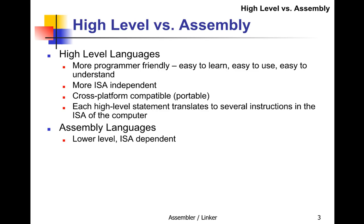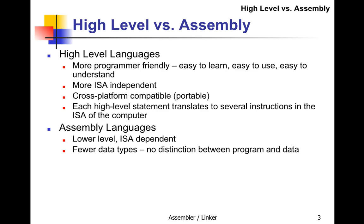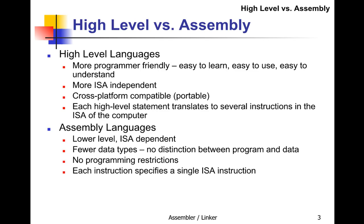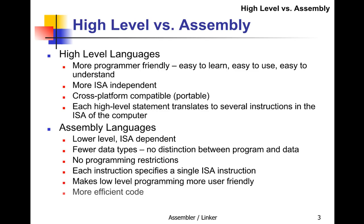Assembly language is lower-level — it's instruction set architecture-dependent, with fewer data types. There's no distinguishing between different data types in assembly; when you read the code, you have to interpret that binary data, and it's not apparent what it is. There are no programming restrictions. Each instruction specifies a single instruction set architecture instruction, making low-level programming more user-friendly than machine code, and sometimes giving you more efficient code because you're closer to the ISA.